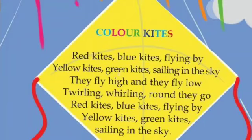So what does the poem say, children? The red kites and blue kites are flying in the sky, and the yellow kites and green kites are sailing — they are sailing like a ship sails on the water. Like that, they are sailing in the sky.